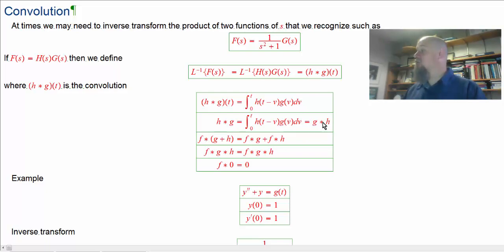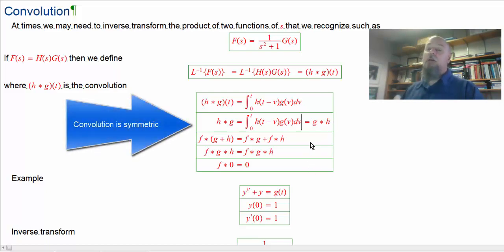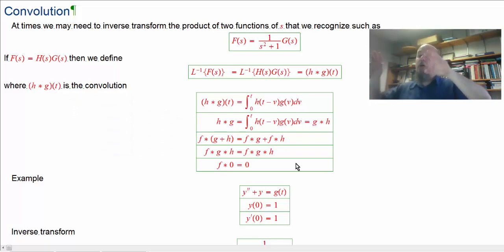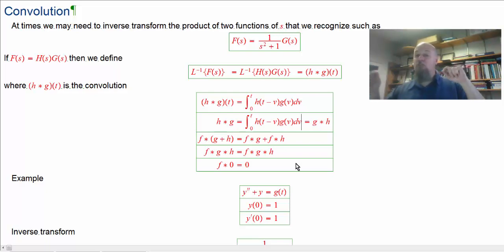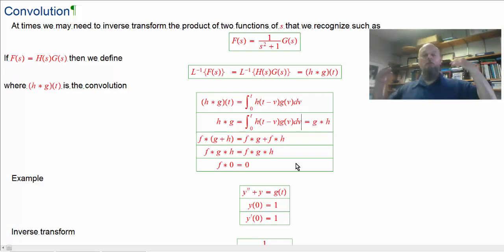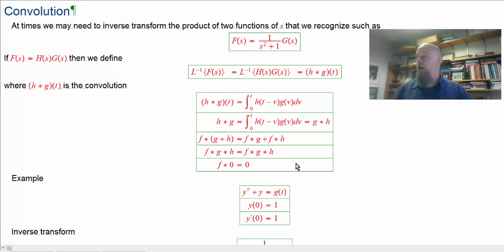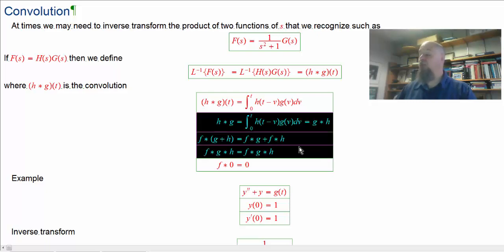I'm not going to prove it that way though. I'm going to prove all these properties using the same technique: take the transform of both sides, move into the Laplace world where convolution is just multiplication, use the properties we already know about multiplication, then transform back. Once I'm in the Laplace world, I can do things like switch the order of multiplication, and then transform back out.